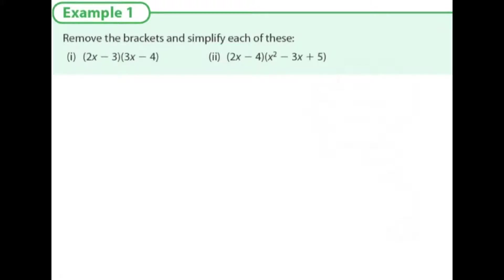In the first question, we note that there are four different parts that we want to multiply: the 2x, minus 3, 3x, and the minus 4. We want to multiply the 2x by the 3x, the 2x by the minus 4, the minus 3 by the 3x, and the minus 3 by the minus 4. So everything in the first bracket by everything in the second bracket. To make this easier, we rewrite this by separating the terms in the brackets.